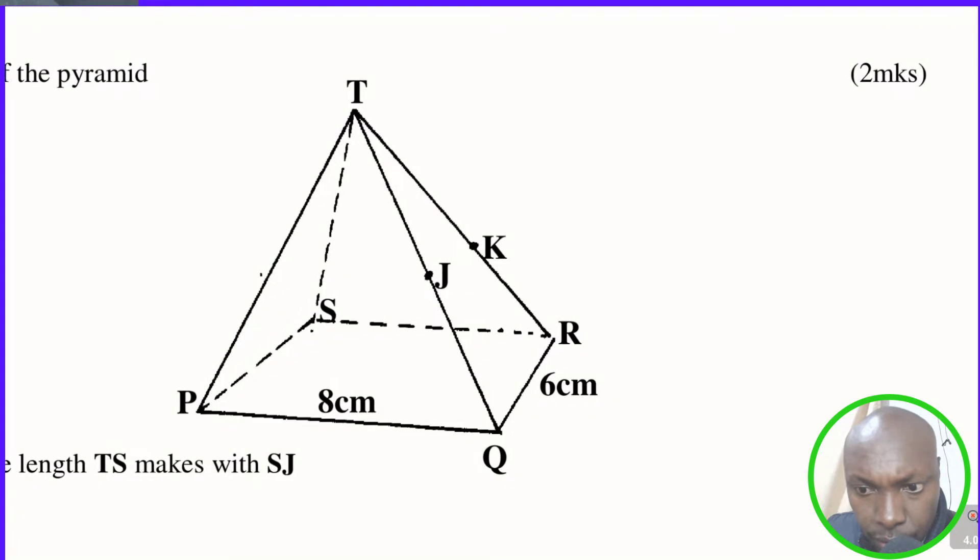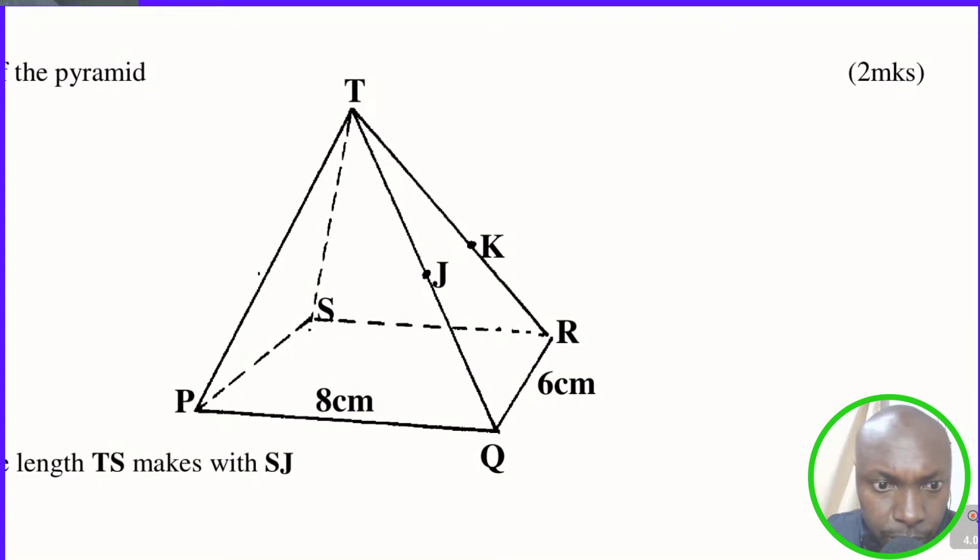So we're given that all these slant heights, this one is a right pyramid. A right pyramid has all the slanting heights equal and therefore all these slanting heights have the measurement of 13, then PQ equals 8 and so on.